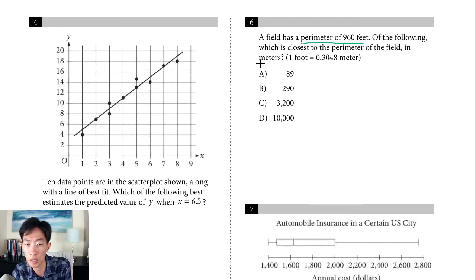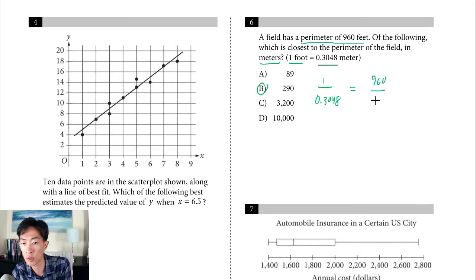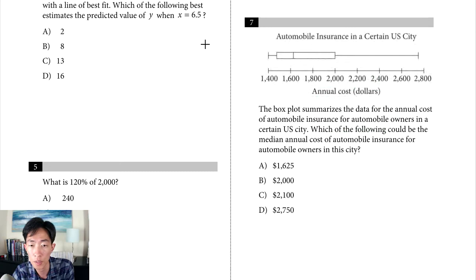Question 6: a field has a perimeter of 960 feet; which answer is closest in meters given one foot equals 0.3 meters? Since every foot is about one-third of a meter, take roughly one-third of 960 to get about 320, and the closest answer is 290. If you set up a proportion with 0.3048 meters per foot and cross-multiply, you get 292.68 meters.